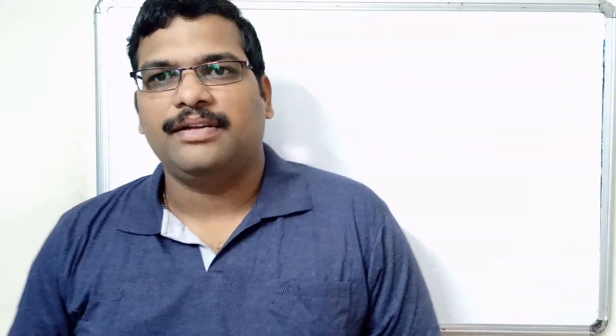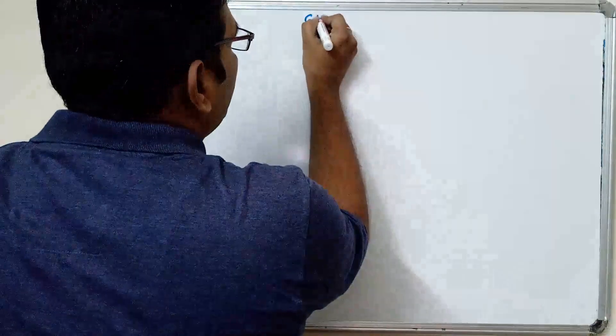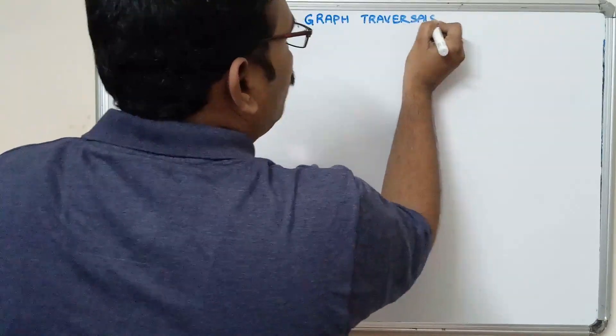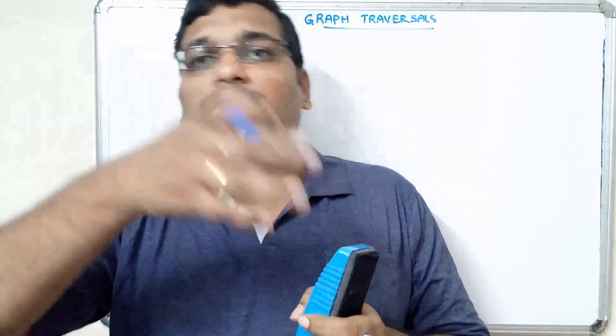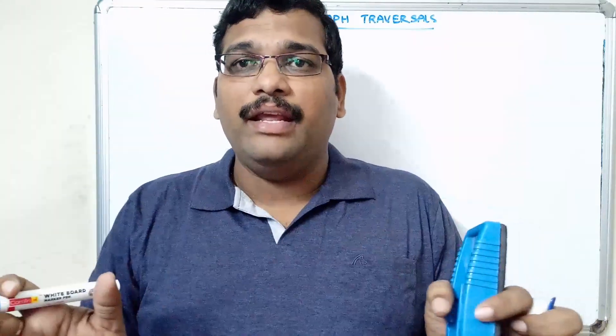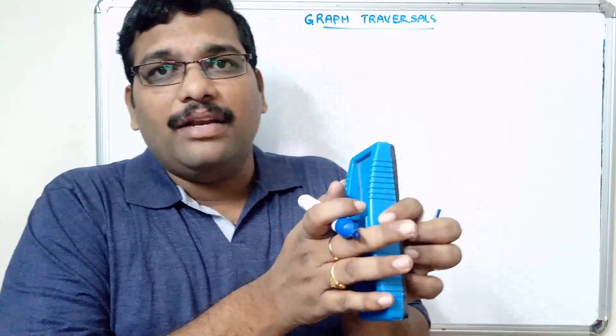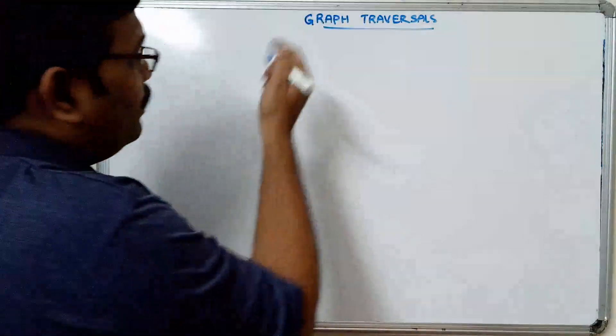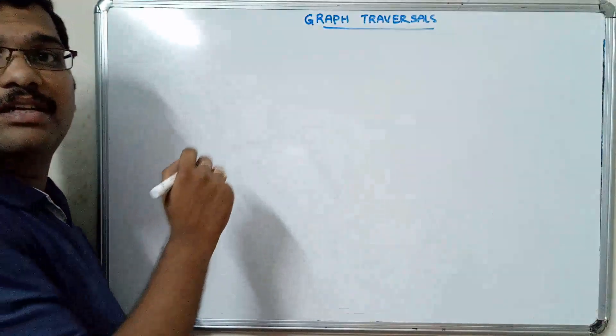Hello friends, welcome back to our channel. In the previous session we covered graph terminologies and introduction to graphs. Now in this session we'll go with another concept in graphs — that is graph traversal. Traversal means visiting all the nodes, traveling around all the nodes in the graph. We will not have any root node, so we can assume any node as a starting node.